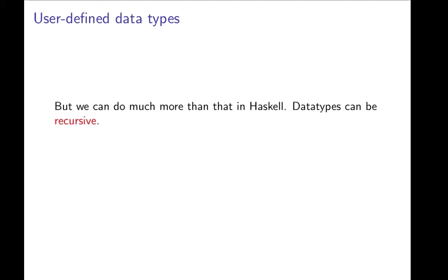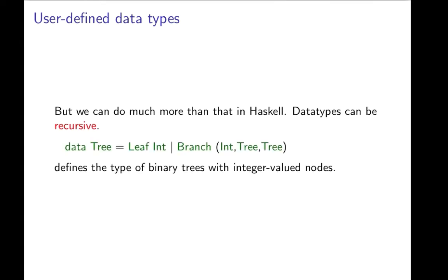Because we can do much more than just having enumeration types, because data types can be recursive. And this is how we can define trees. Data types in Haskell can be recursive, and because of that we can define the type of binary trees with integer-valued nodes.